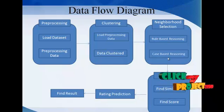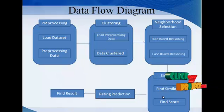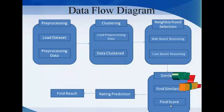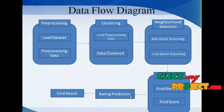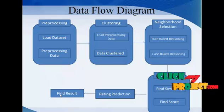After finding the neighbors, we find the similarity value for neighborhood selection. From the similarity, we calculate the score. Then, combining the CCF and RCF values produces the WRCCF value, which denotes the rating prediction. From that prediction, we analyze the final result — which movie is going to be the best — and that movie will be recommended.